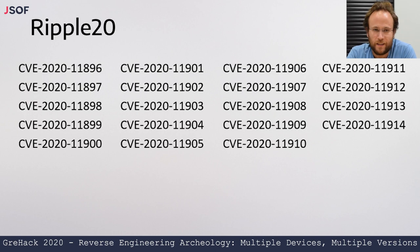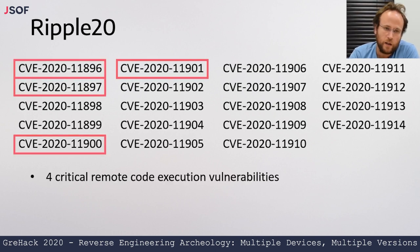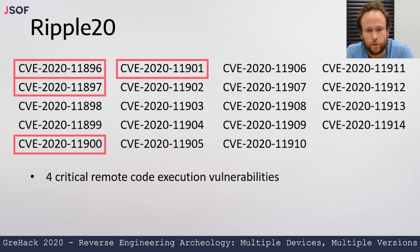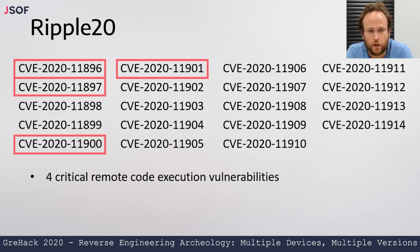These are the 19 CVEs of Ripple 20. Out of these, four are critical remote code execution vulnerabilities, while the others have ranging effects such as information leak and denial of service.